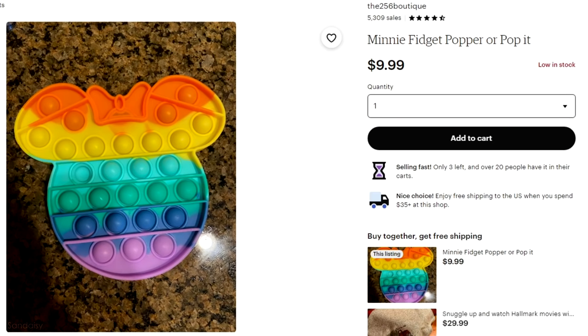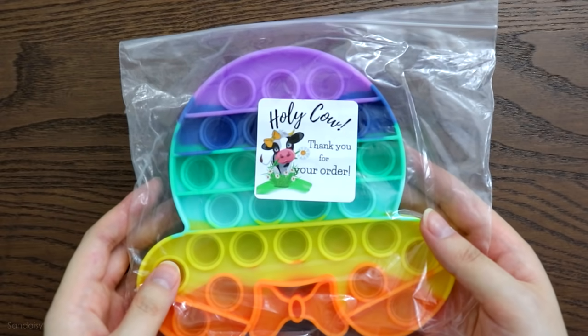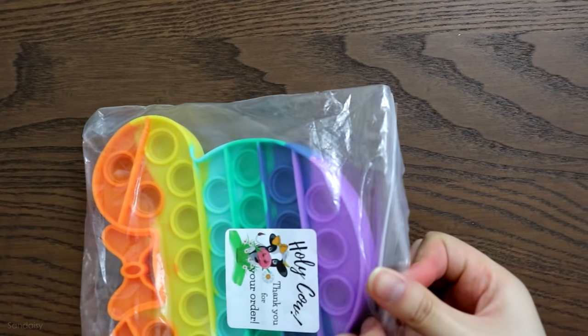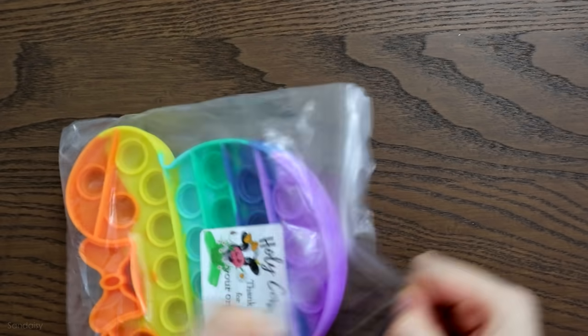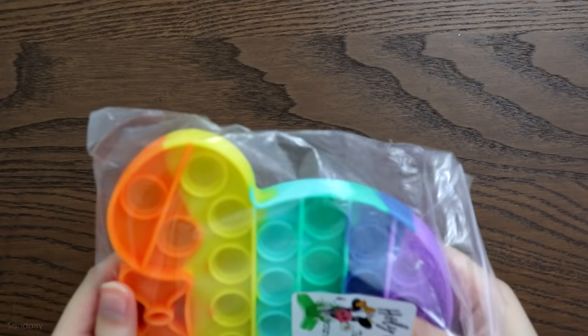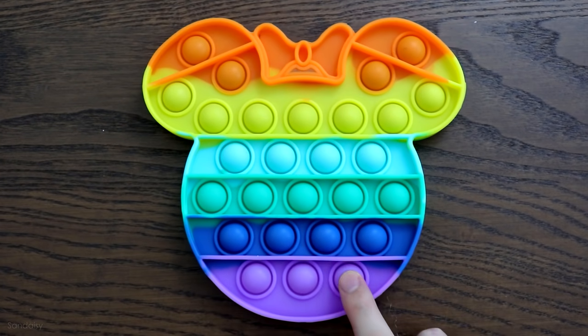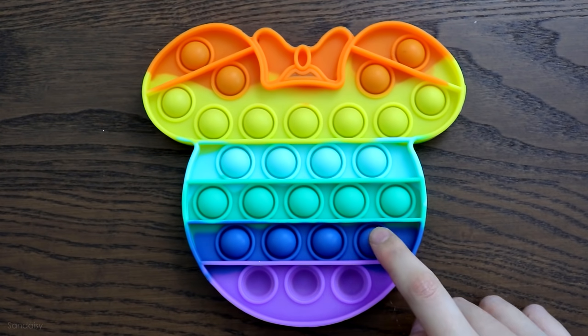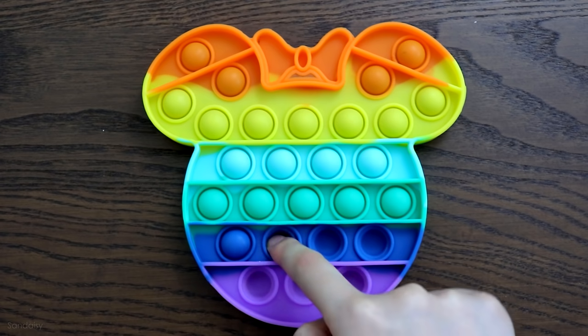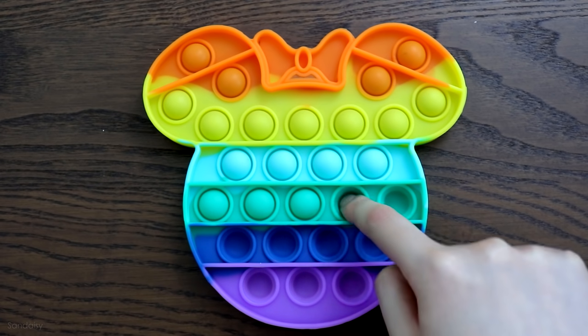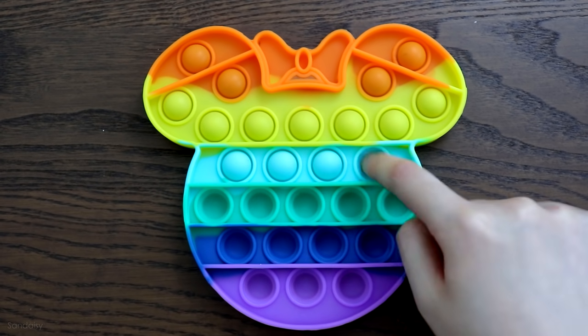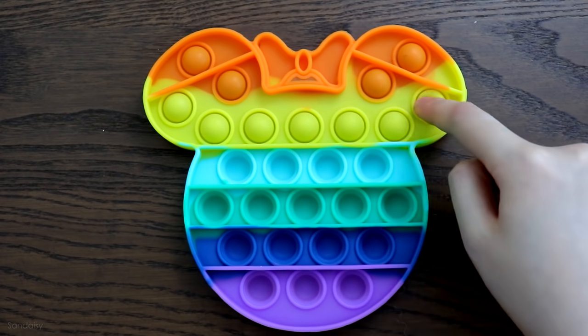I keep seeing these type of toys all over the internet. They are called Pop-its and I saw Minnie Mouse and immediately I bought it because Minnie Mouse and it's rainbow too. So far what I noticed about buying fidget toys on Etsy is your toys are packaged and personalized from a small business or just any kind of business as opposed to buying it from a big chain like Amazon or going to Target or Walmart and buying it from the store.